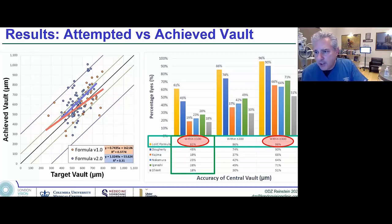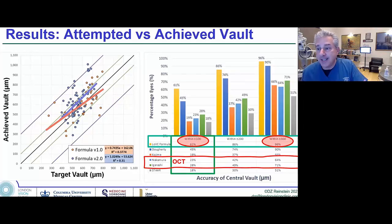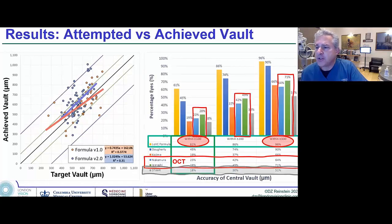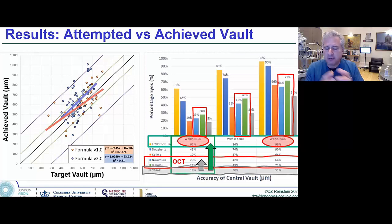Let's look at the within a hundred. Obviously OCT is better, and the Nakamura, the NK2 and the NK3. I'm very excited about that. Better than the original STAAR formulations. STAAR really, if you're using the Ocos website, you're now really behind because obviously OCT is better, but high frequency ultrasound, direct measurements of where the lens is going to be placed is even better.